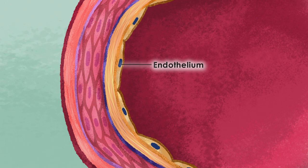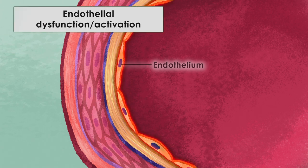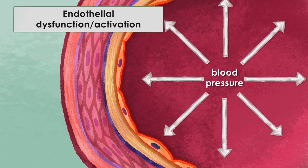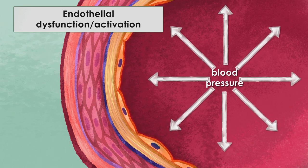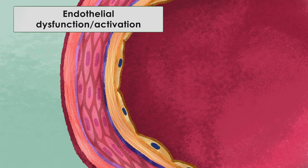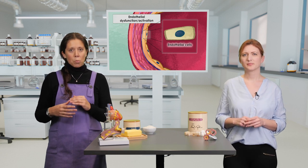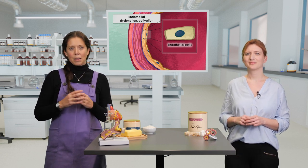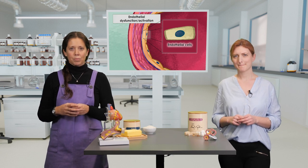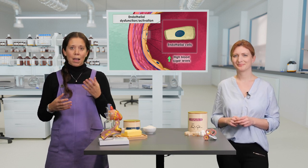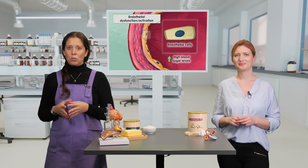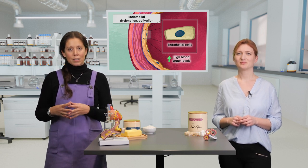Atherosclerosis starts with endothelial dysfunction. This dysfunction is often also called endothelial activation and can be caused by high blood pressure. Imagine you have a pipe that is constantly under pressure — over time, the inside of the pipe will get damaged. Since endothelial cells are the innermost layer of blood vessels, this is exactly the place where this could happen. Also, high blood sugar levels lead to changes in the cells that also render them activated.